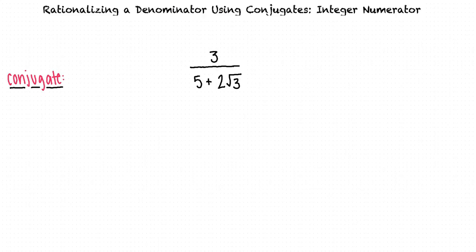Okay, so the conjugate of the denominator is 5 - 2√3. This means we need to multiply the expression by (5 - 2√3)/(5 - 2√3).